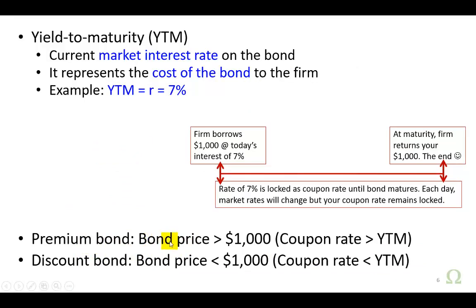These concepts are summarized here. A premium bond is one with a price above $1,000, meaning the coupon interest rate on your bond is greater than the current market interest rate, which is called the yield to maturity. On the flip side, a discount bond is one where the bond price is below $1,000, meaning the coupon interest rate on the bond is below the current market interest rate. And this is a wrap on this introduction. Thank you.